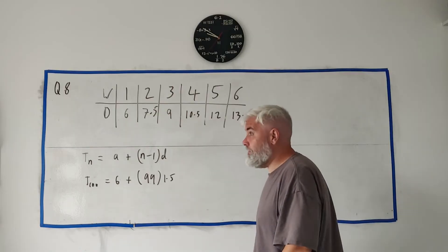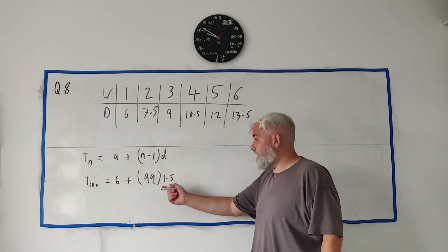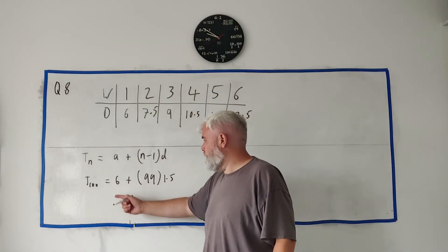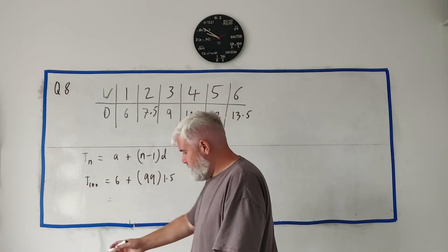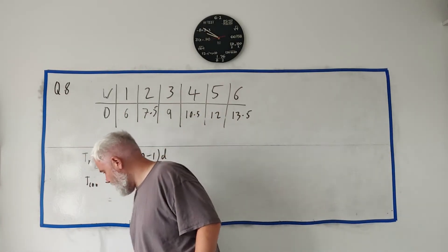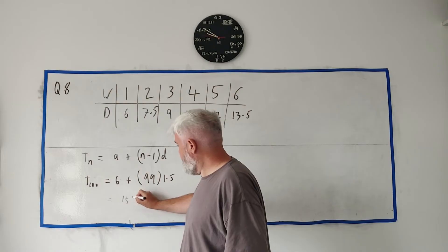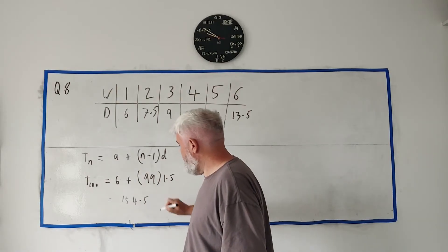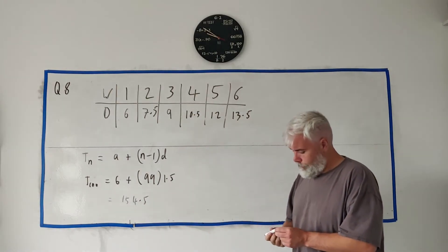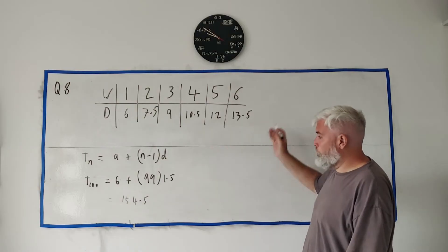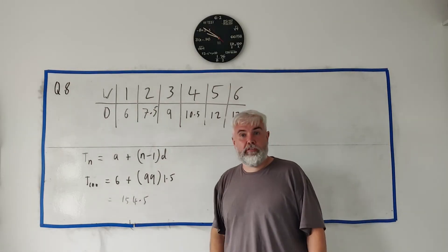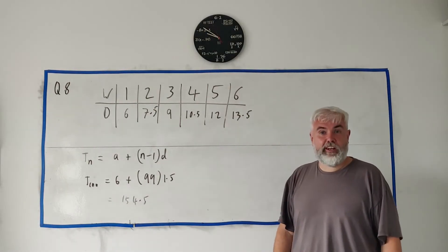This comes out to be 150... minus 1.5 is, I guess, 148.5, plus 6 is... well let me just double-check with my notes here. Yeah, 154.5. So after 100 weeks she'd be running 154.5 kilometers if she kept that up.